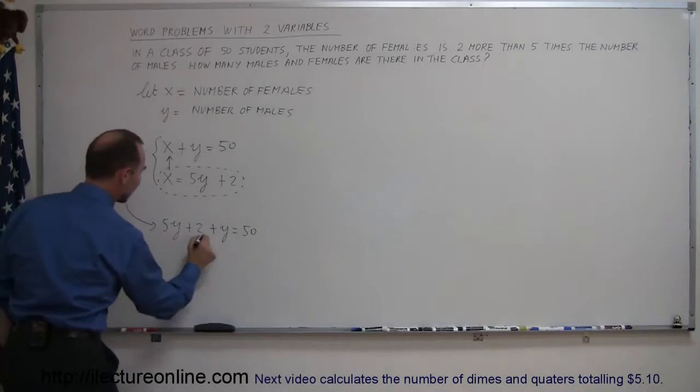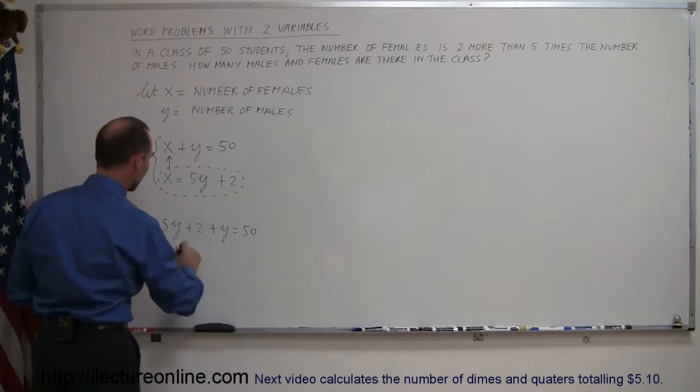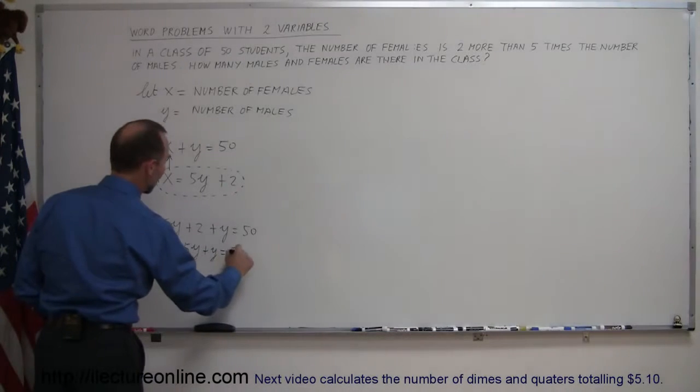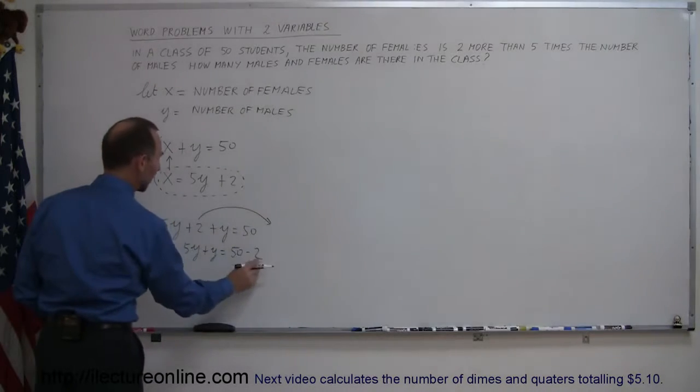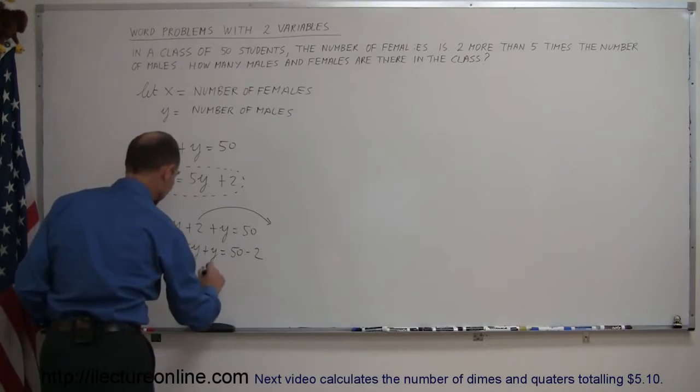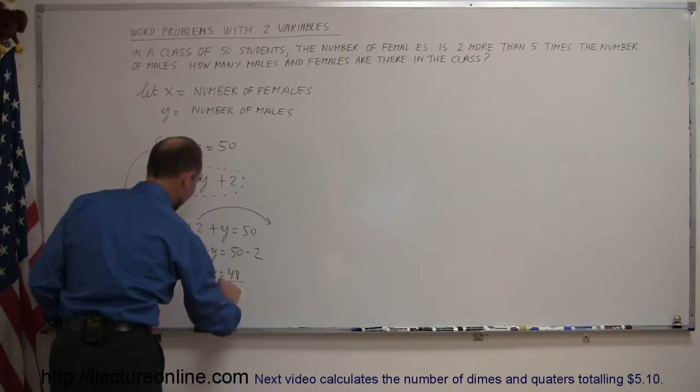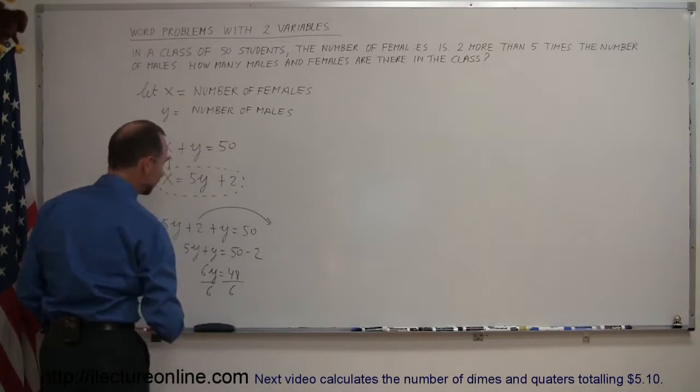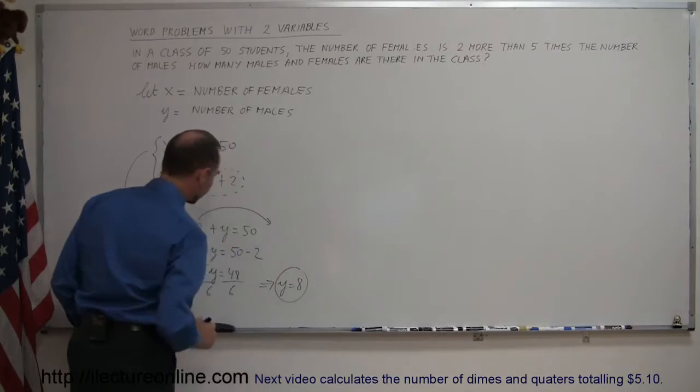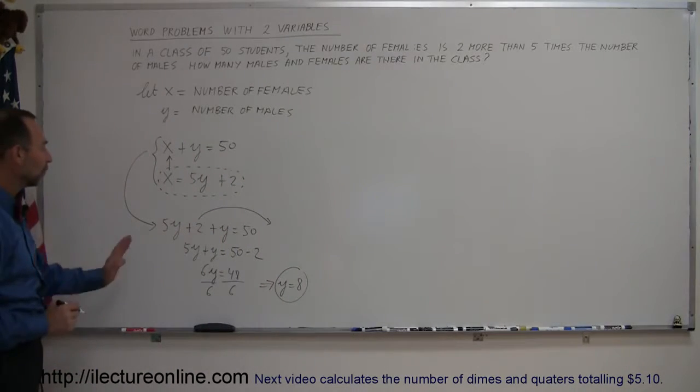Notice that this x is replaced by five y plus two. Now we put all the y's in one place, all the numbers on the other place, so five y plus y is equal to 50 minus two. Remember, when the two goes across the equal sign, the sign changes. Now we can combine like terms on both sides, so this is six y is equal to forty-eight. Divide both sides by the coefficient in front of y, and so that means that y is equal to eight. Forty-eight divided by six is eight.